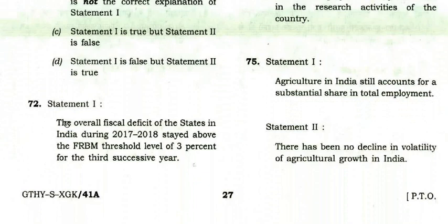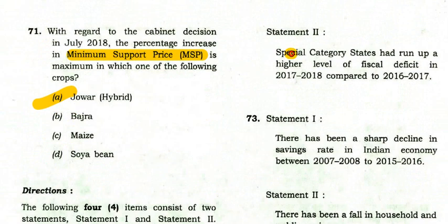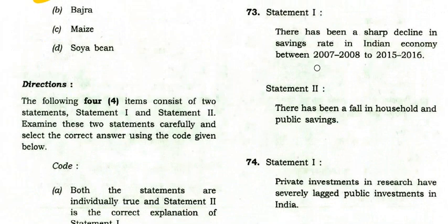Question 72: The overall fiscal deficit of states in India during 2017–18 stayed above the FRBM threshold level of 3% for the third successive year — this is true. Reason: special category states had run up a higher level of fiscal deficit in 2017–18 compared to 2016–17. Both true and Statement 2 correctly explains Statement 1 — option A is right.